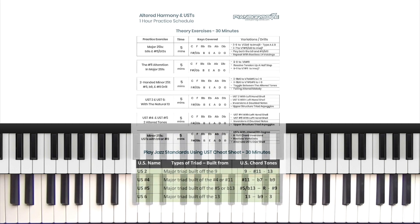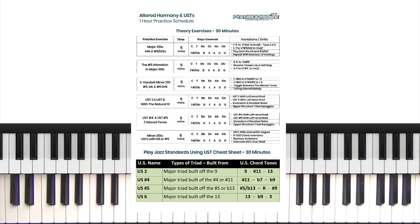You will see that this one hour practice plan is split into two sections. The first 30 minutes contains six theory drills, and then the second 30 minutes should be spent manually working out upper structures using the upper structure cheat sheet. The drills and exercises covered in this practice plan will help you to visualize alterations and upper structures and also help with our aural recognition of the alterations.